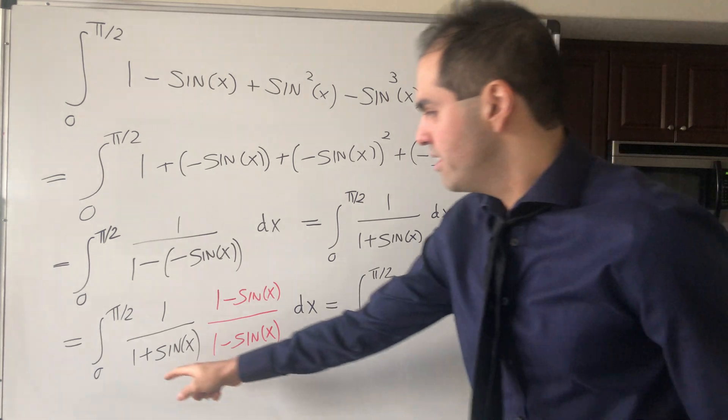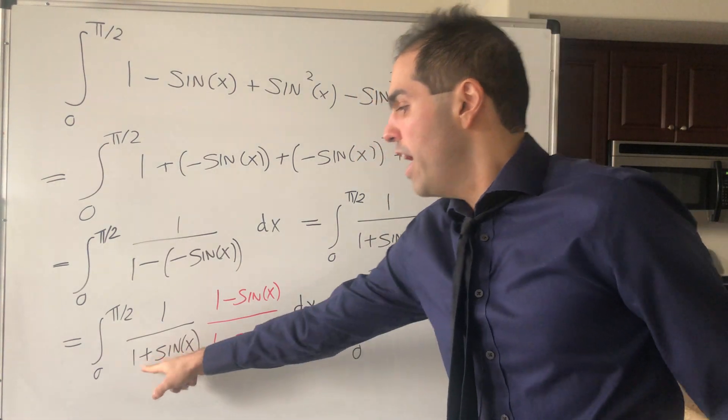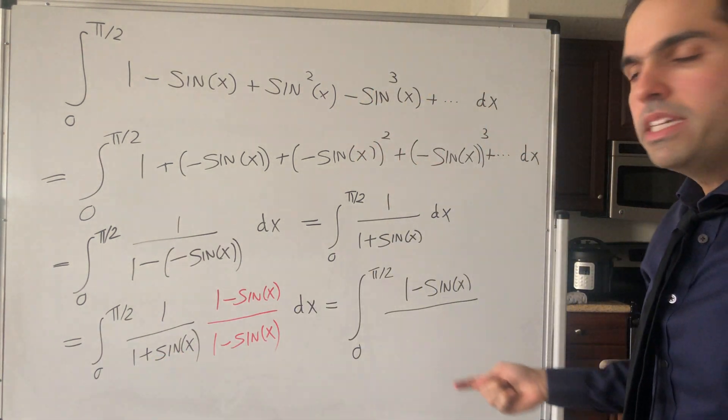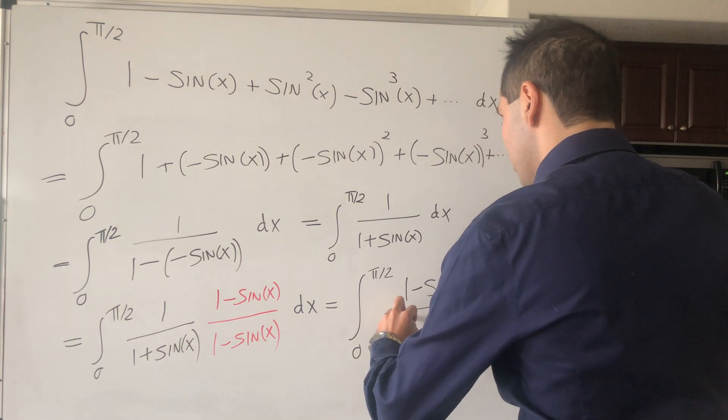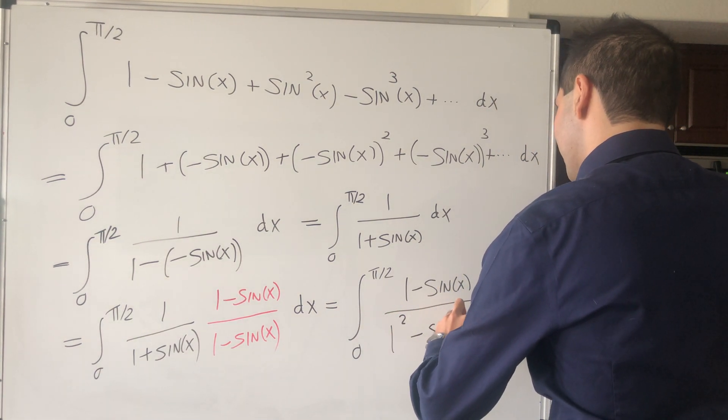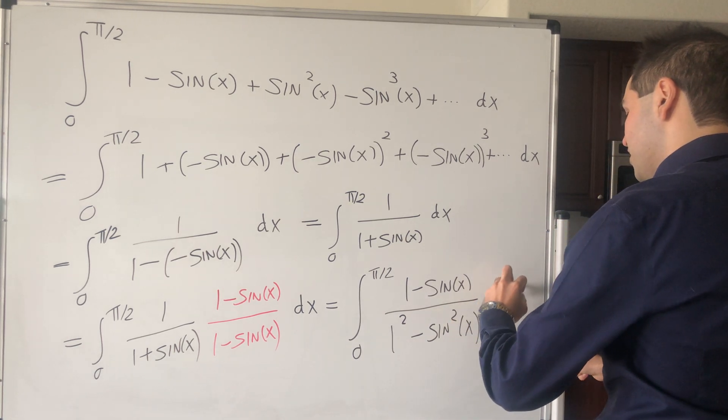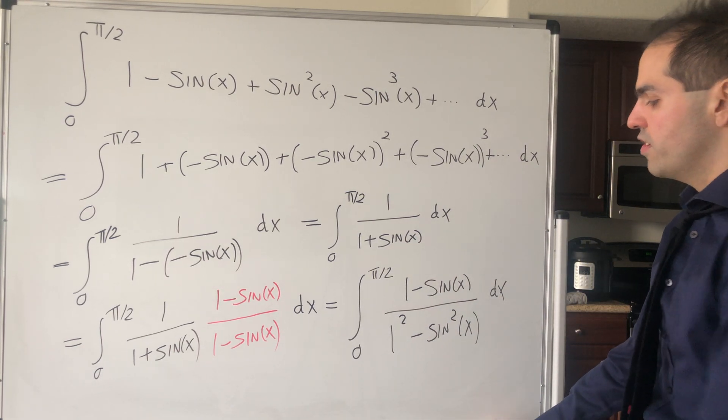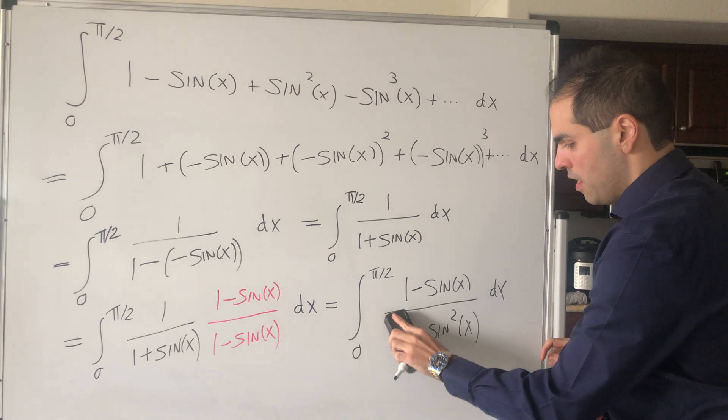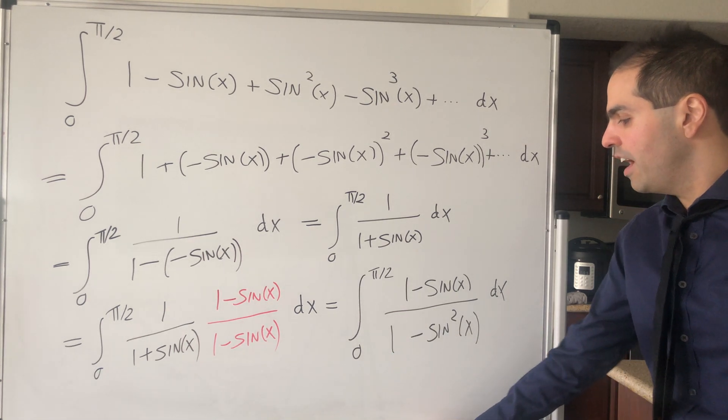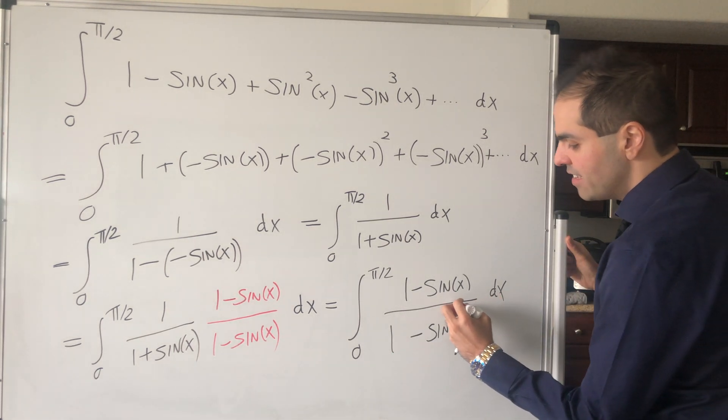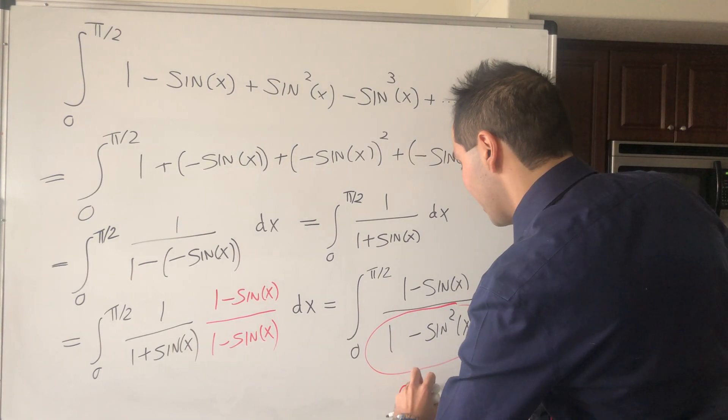All right. And then the denominator, well, let's see. So 1 plus, a plus b times a minus b, that's a squared minus b squared. So 1 squared minus sin squared of x, dx. But look, 1 squared, that's just 1. And then here's what makes this so nice. So 1 minus sin squared of x, that's just cosine squared of x.